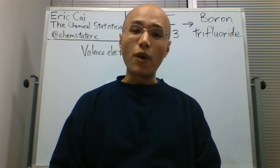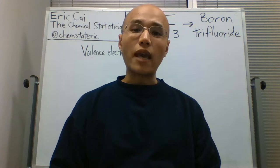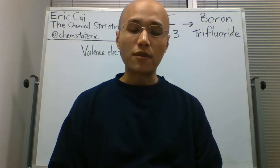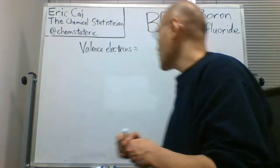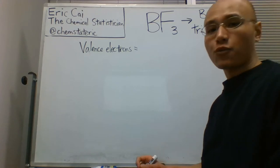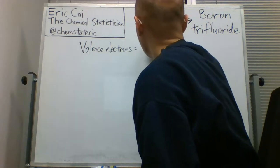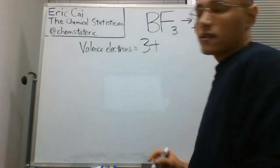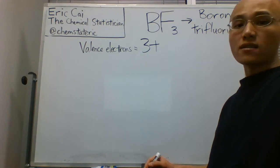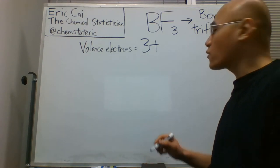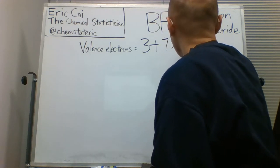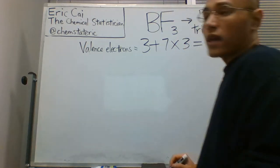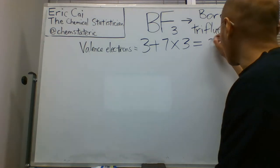But first, as always, we need to start by counting the number of valence electrons in the constituent atoms. We know that boron has three valence electrons, and that fluorine has seven valence electrons. There are three fluorines, so that gives us 21 from the three fluorines. In total, then, we have 24 valence electrons.